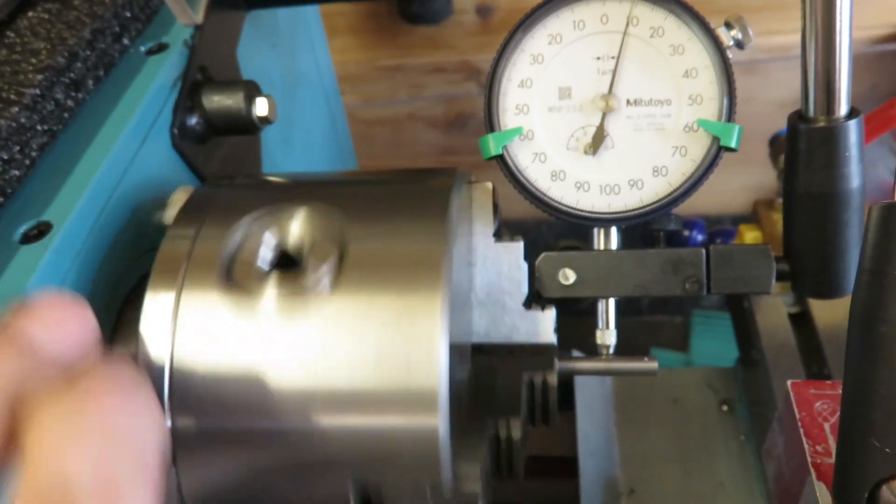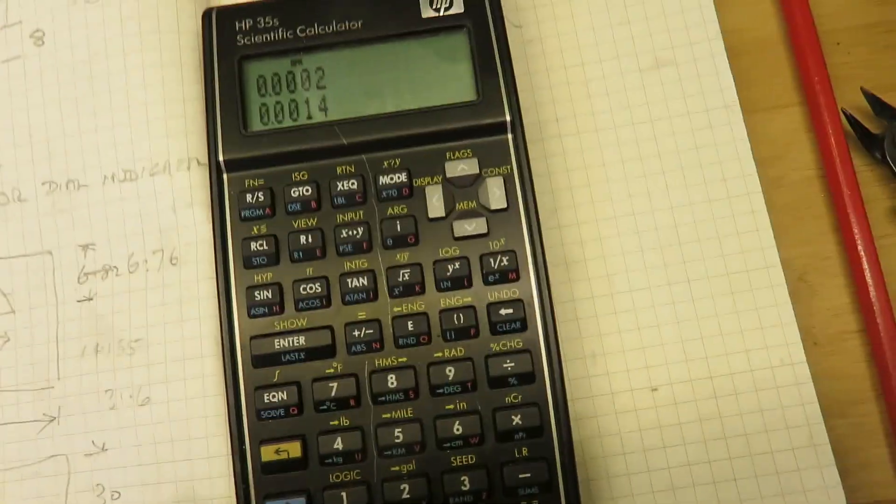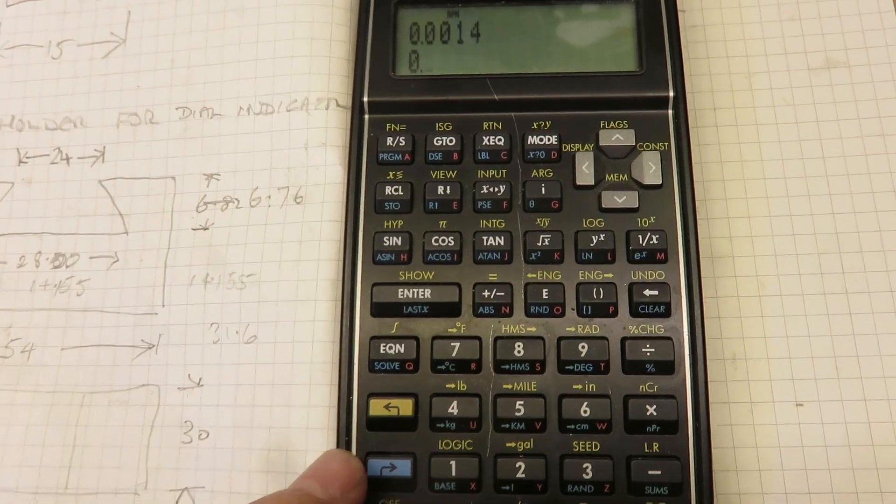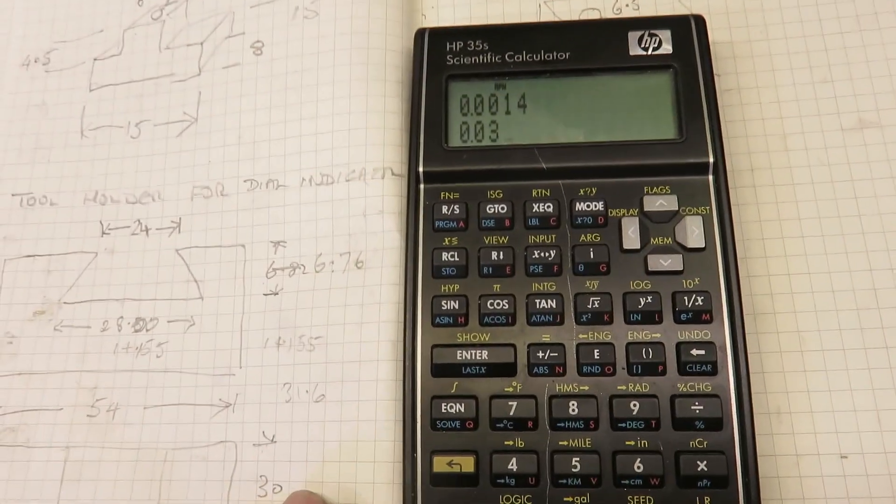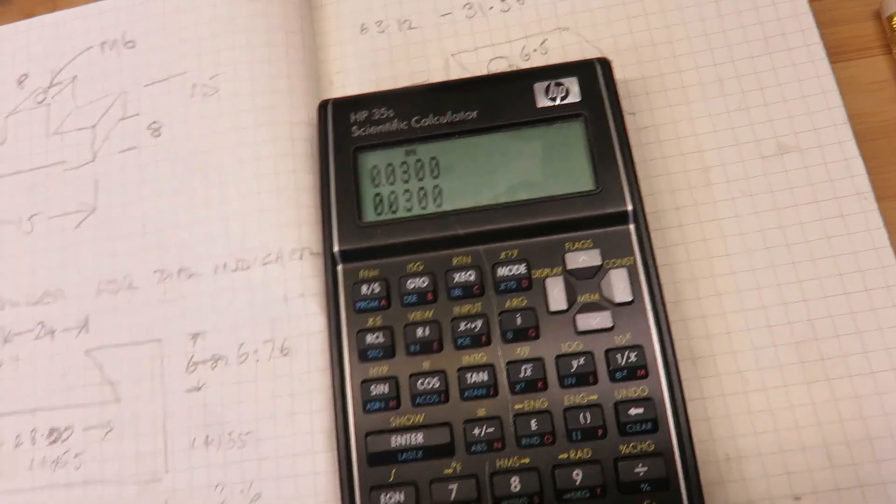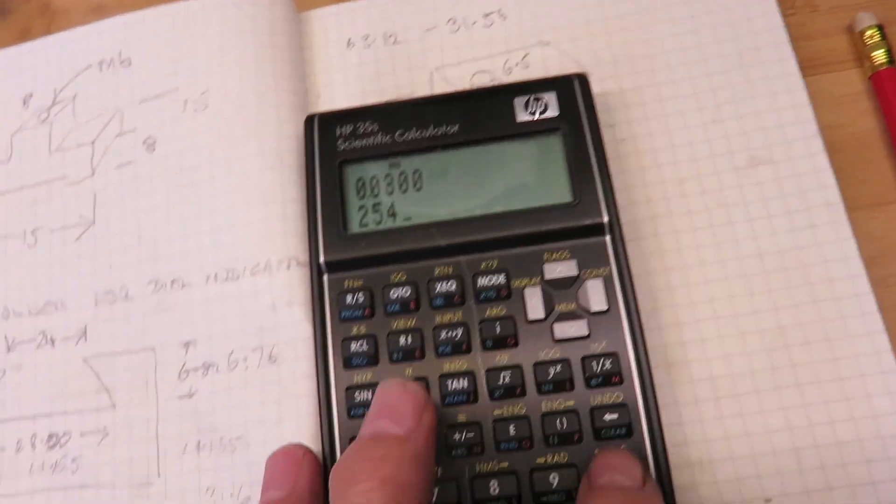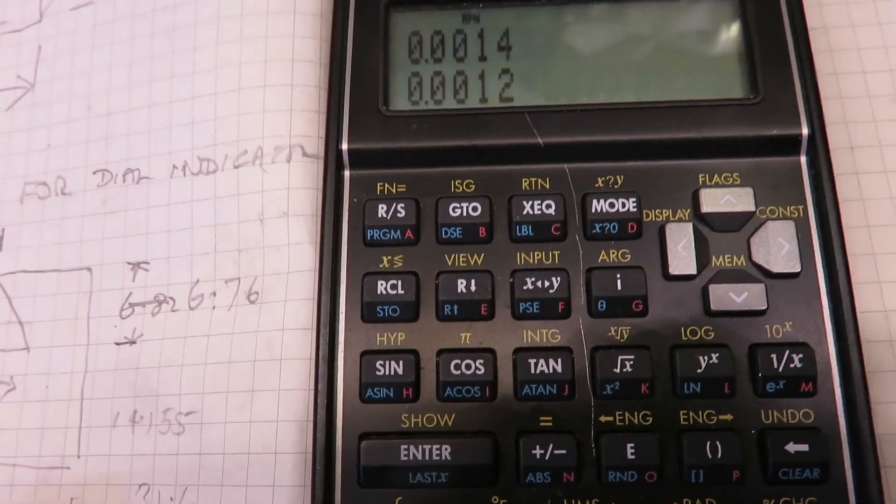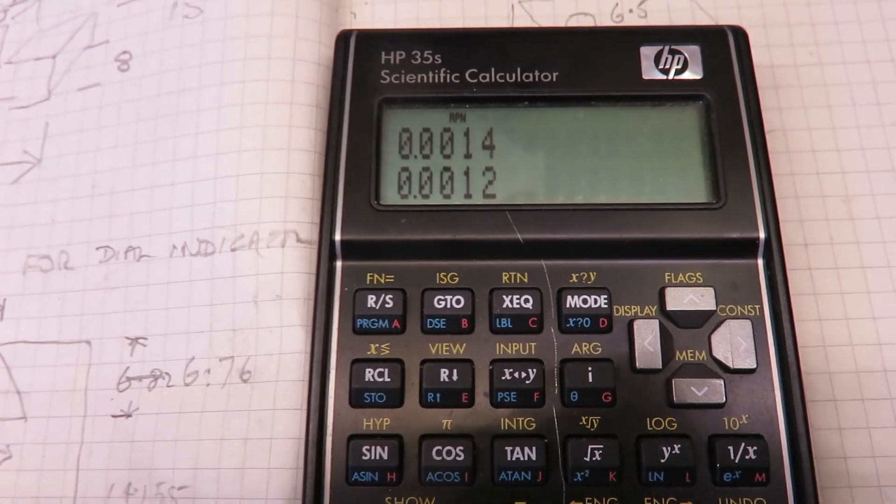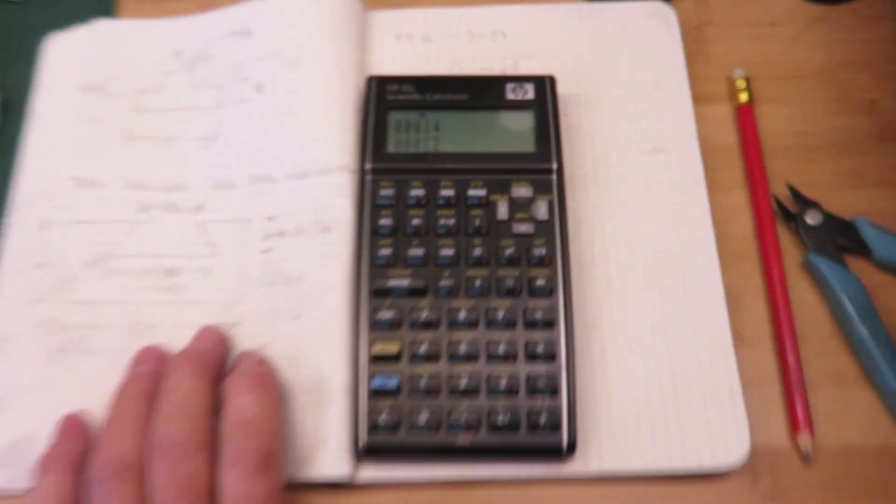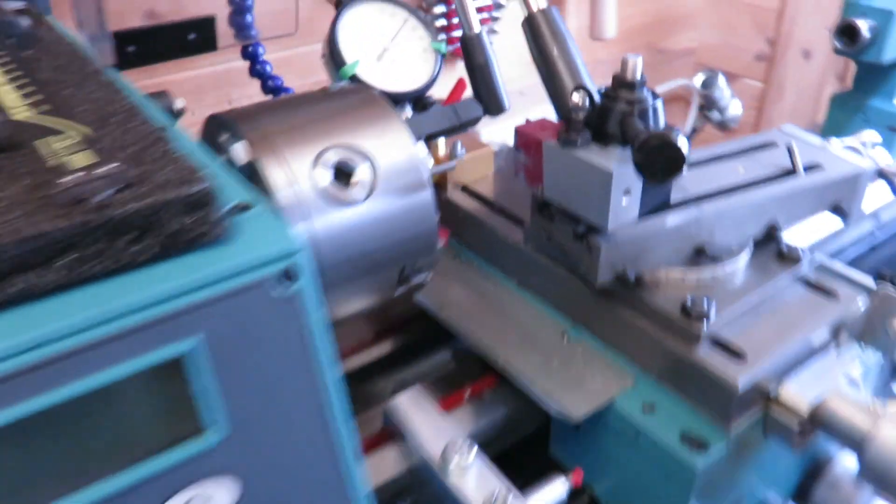Let's have a look and see what that works out to. Okay, so 0.03 divided by 25.4 equals... look at that, just over one thou run-out. Either I was very lucky and got an extremely good three-jaw chuck, or they make these things really well.